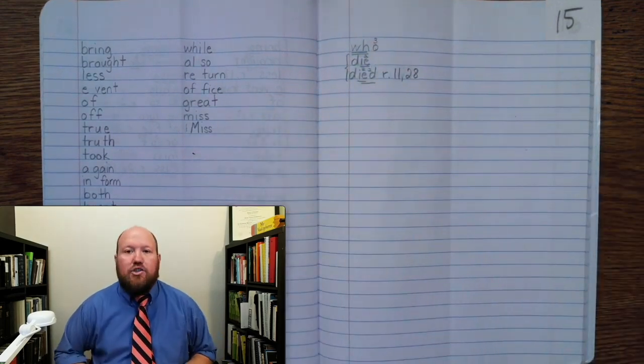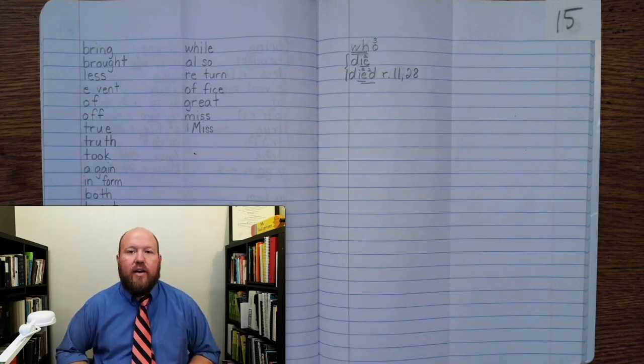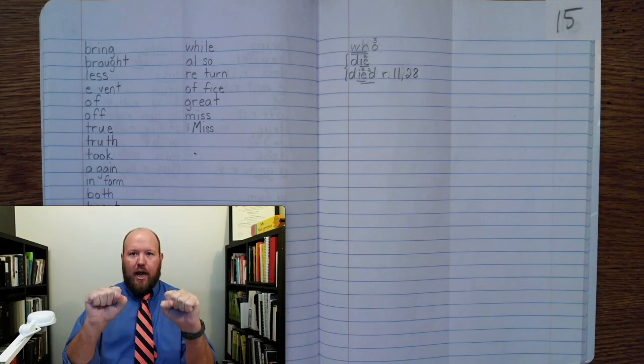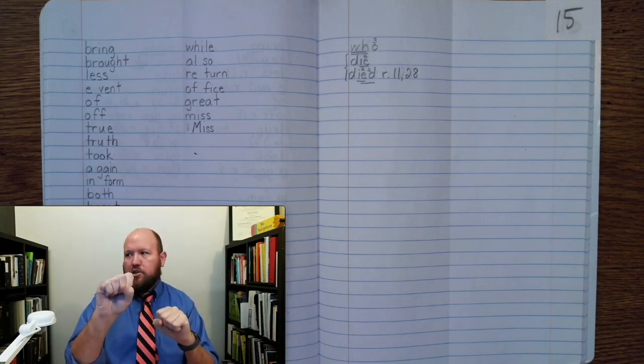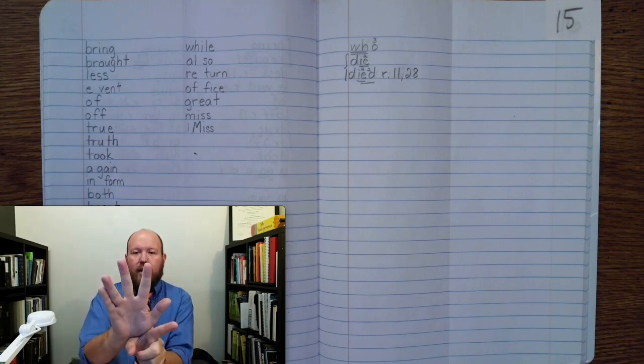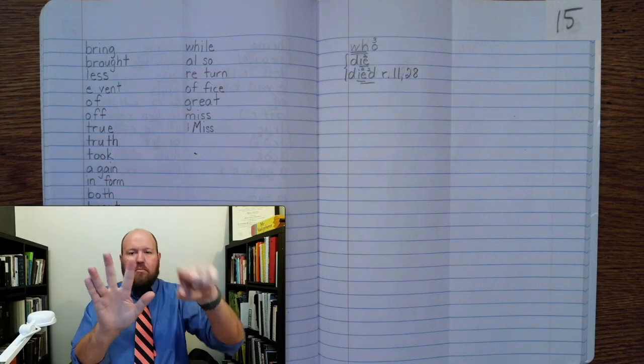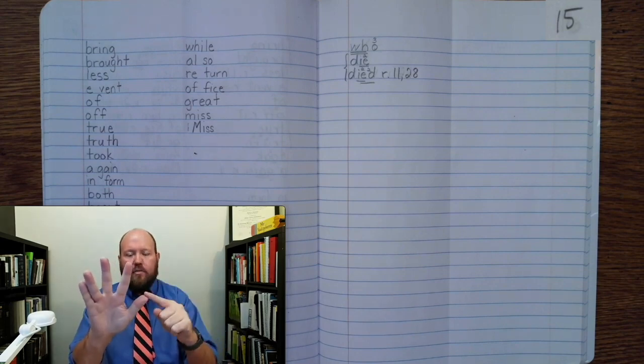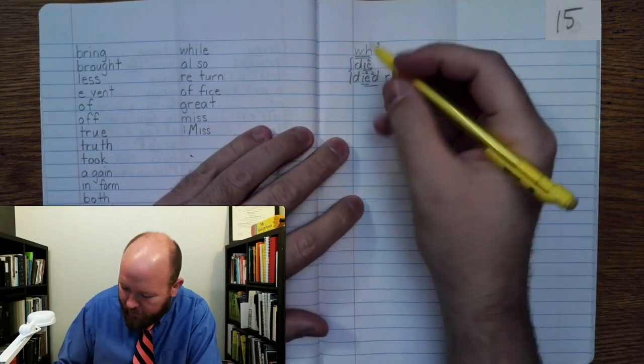The next word is CHANGE. Like look how the color of the leaves change in fall. Change. Base word change. C-H-A-N-J-E. Now here I have an N and a G, but it's not the NG phonogram. They're each making their own sounds. Alright, write change.